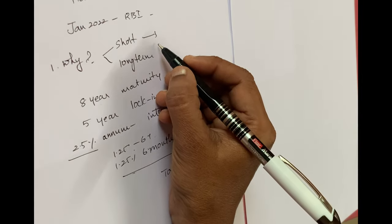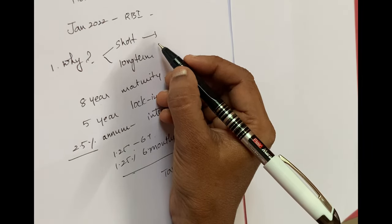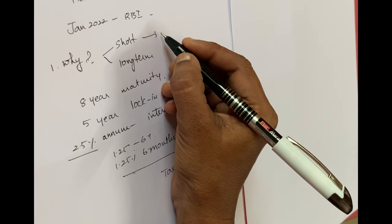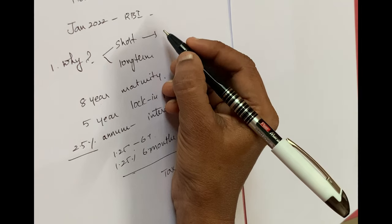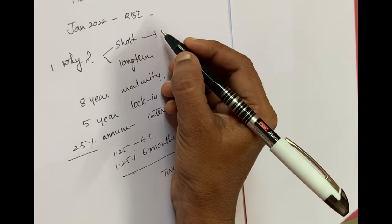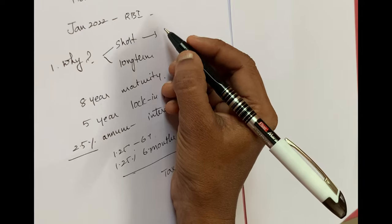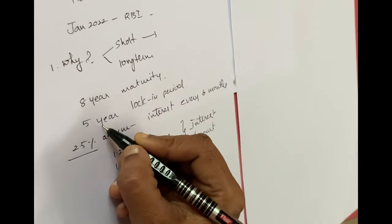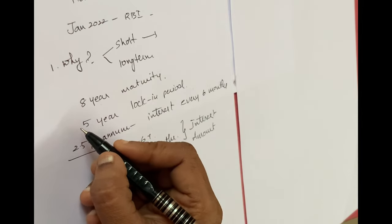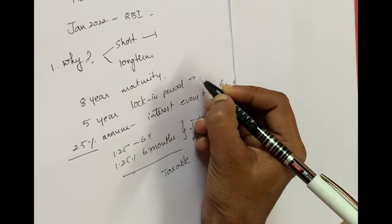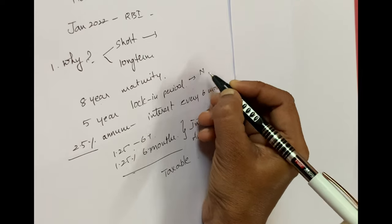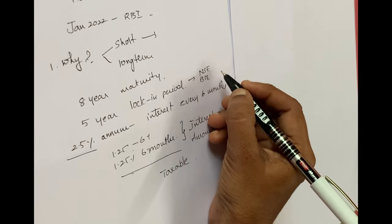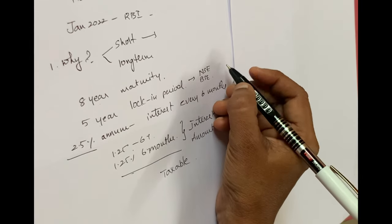If you want to get your amount back in 1 or 2 years, this scheme is not suitable — you would need the stock market for that. However, if you want liquidity after 5 years, you can sell your units on the National Stock Exchange or the Bombay Stock Exchange.